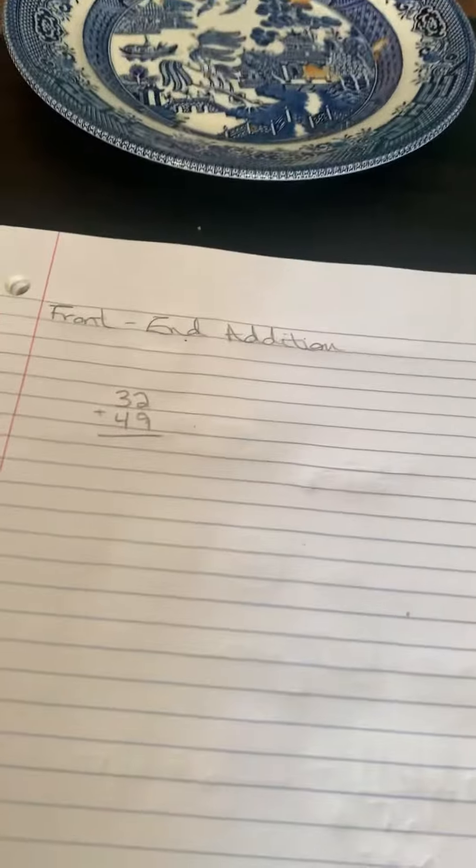So for this one you start with the numbers that are over front. In this case that's a 30 and a 40. So you would add those together, 70, and then a 2 and a 9 which are in the ones place, that would make 11, and then you add those pieces together.